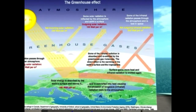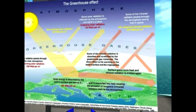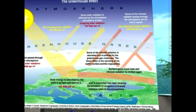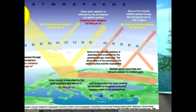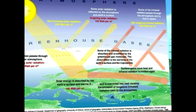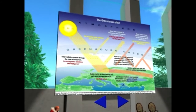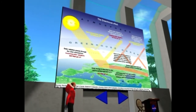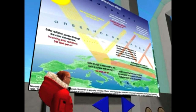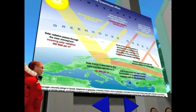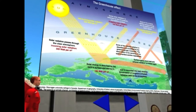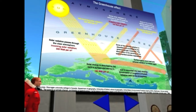Without an atmosphere, the Earth would be about minus 15 degrees centigrade, which is about 0 degrees Fahrenheit — we'd be an ice ball. With the presence of an atmosphere including greenhouse gases, light water, and carbon dioxide, the Earth is actually habitable at about 15 degrees centigrade, or about 60 degrees Fahrenheit on average.